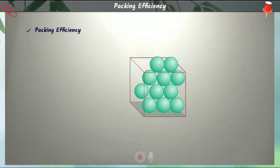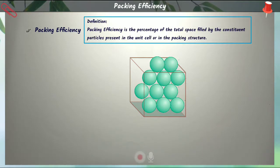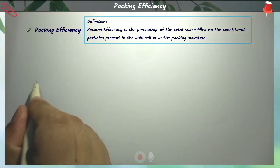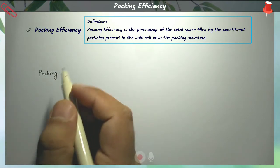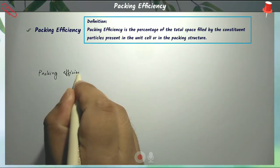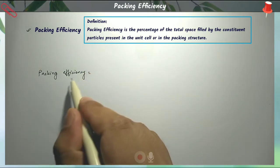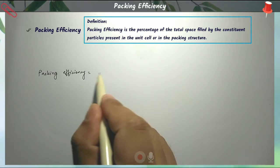Packing efficiency can be defined as the percentage of the total space filled by the particles in that packing structure. Mathematically, we can define the packing efficiency using a specific equation, which we are going to use to calculate the packing efficiency for different structures.